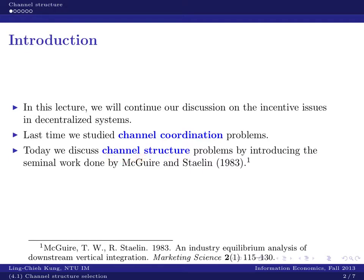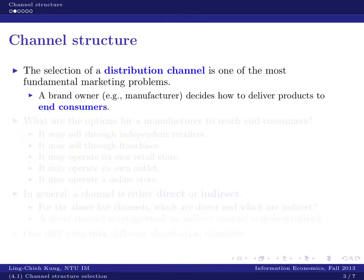Today we will discuss another type of decentralized incentive issue called the channel structure problem. To this purpose, we will introduce a classical paper written by McGuire and Styling in 1983, published in Marketing Science, one of the most important marketing journals in this academic field.